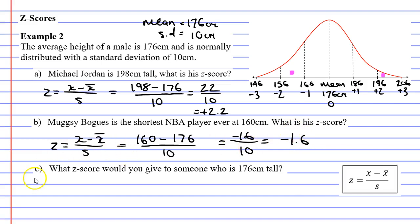Now, moving on to question C. It says, what Z score would you give to someone who is 176 centimeters tall? Now, 176 centimeters is the mean, or average. And whenever you fall on the mean, your Z score is zero, because you're zero standard deviations above or below the mean. So we're just going to write that Z, or our Z score, will be zero.